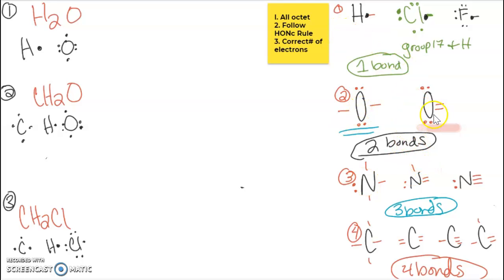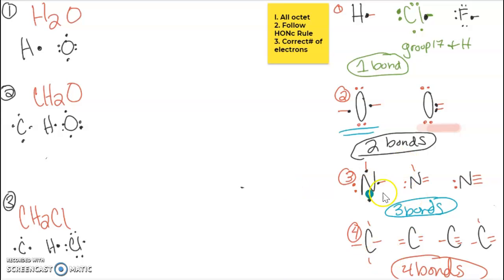If it is oxygen or sulfur, it's going to create two bonds. It will have two electrons to share, whether that is a double or two single bonds — oxygen and sulfur will form two bonds. Nitrogen will form three bonds; it has three valence electrons to share, so it will form three bonds.